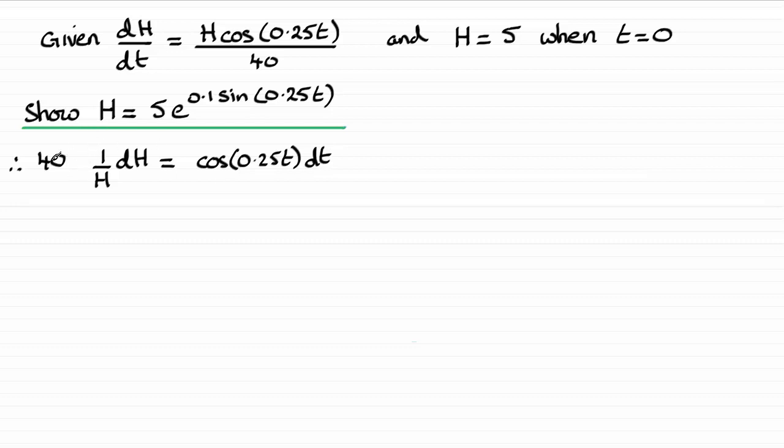So by pulling out the 40, it just means I'm left with the integral of 1 over H as opposed to 40 over H. The 40 is a constant so I can do that. Integrate the other side as well.